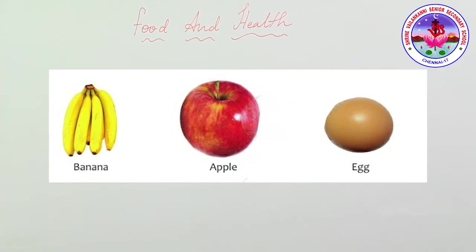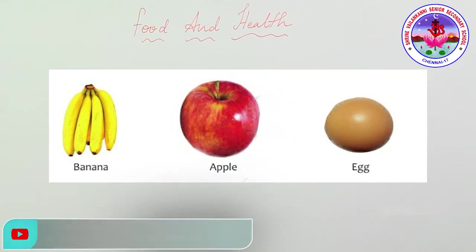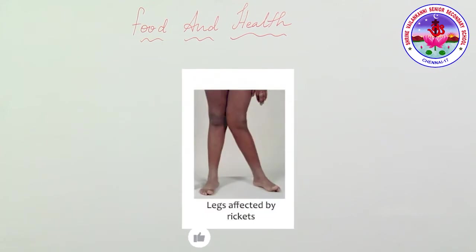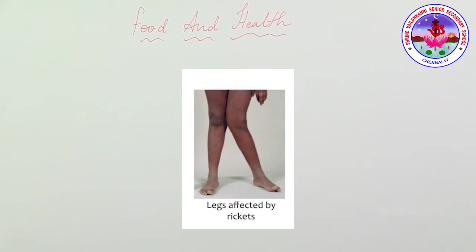Anemia is the disease caused when there is a lack of iron in the food. Eating foods like spinach and other green vegetables, fruits like guava, apple, bananas, and pulses — which are rich sources of iron — will improve your health. When food doesn't have vitamin D, rickets will occur. This causes the bones to become very soft and easily bent, which is why people affected by rickets have bow-legs.